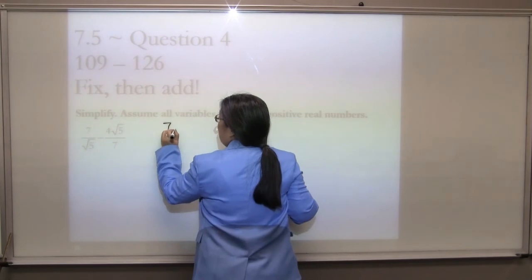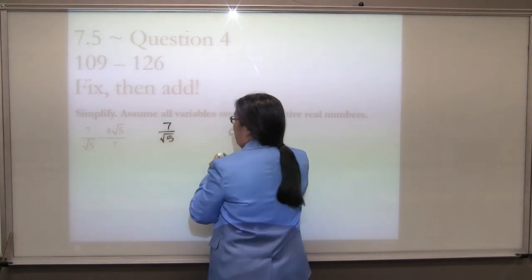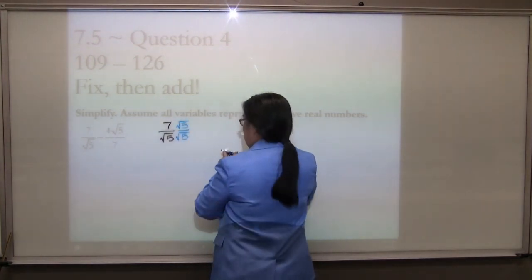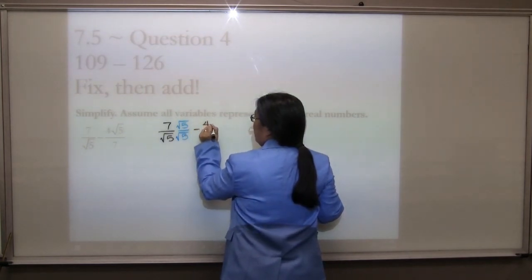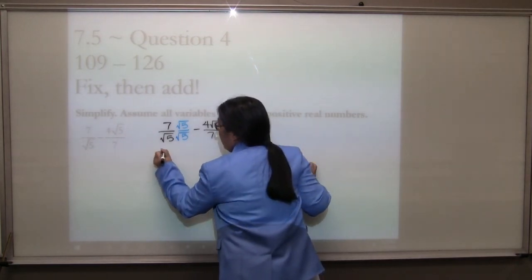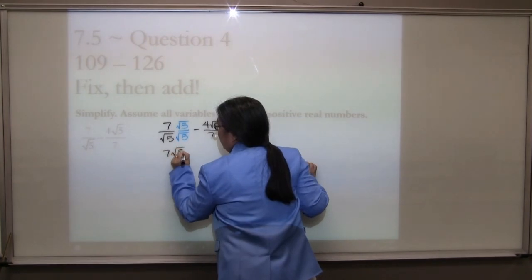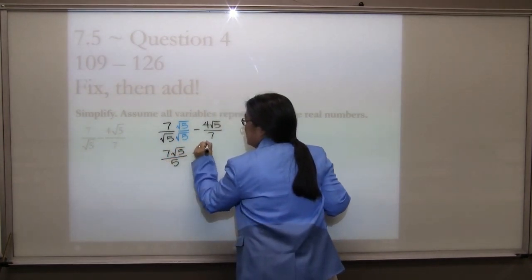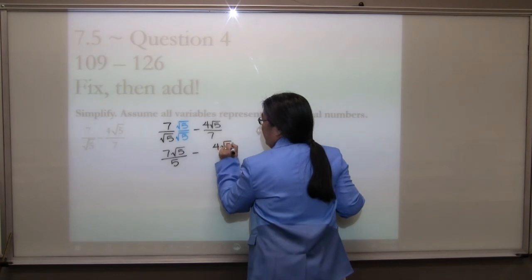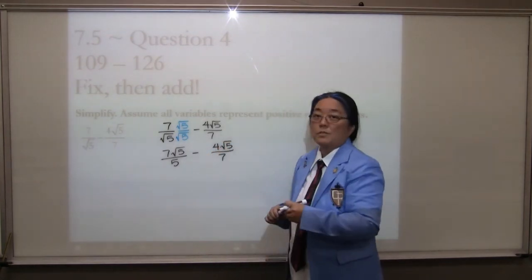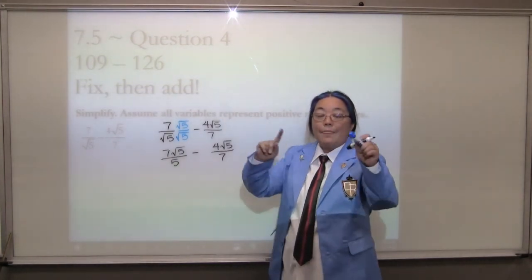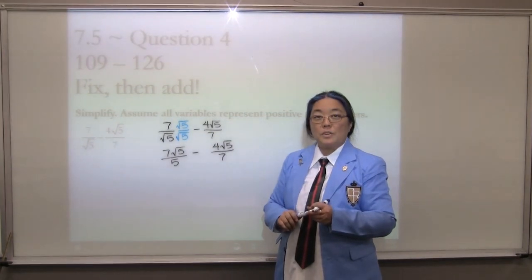Here we go. 7 over the square root of 5 — how do we fix that? We have to multiply it top and bottom by the square root of 5. That is secretly a 1, which will not change the value of it. And we still have this minus 4 square root of 5 over 7 hanging out. That is your work. And then you're going to simplify it as 7 square root of 5 over 5. Make sure that this is still there. This right here — step 1 and step 2 — that will get you half credit. Please make sure you can at least get half credit.